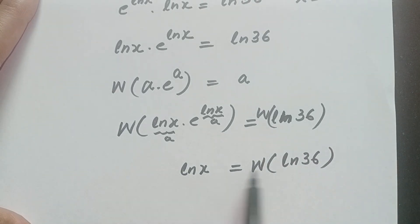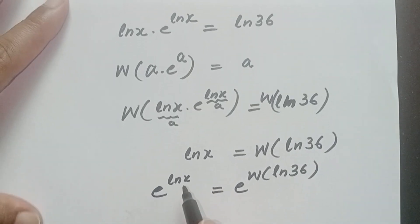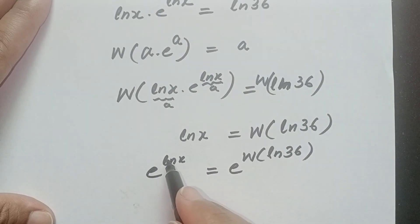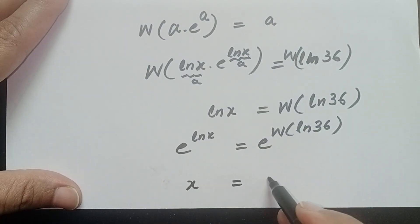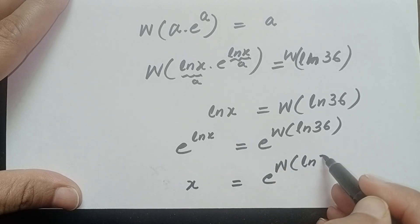So we take the base e on both sides. We can write e power ln x is equal to e power this Lambert W function ln 36. So this we know is equal to x we have used here. So we can write x is equal to e power Lambert W function ln 36.